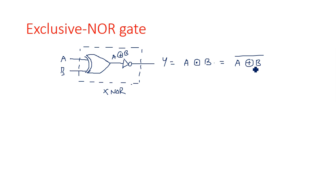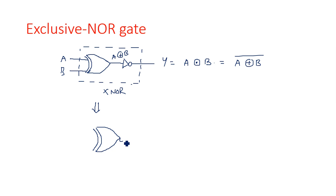We can also write A XOR B = (A XNOR B) complement, or A XNOR B = (A XOR B) complement. Whenever we have a NOT operation we simply add a bubble at the output of the gate — that gives the XNOR symbol. So with inputs A and B, the output is Y = A XNOR B. Now let's see the truth table of the XNOR operation.